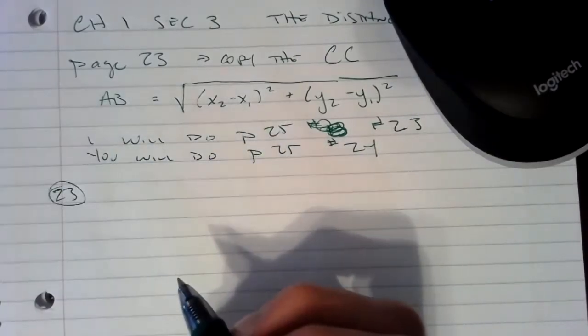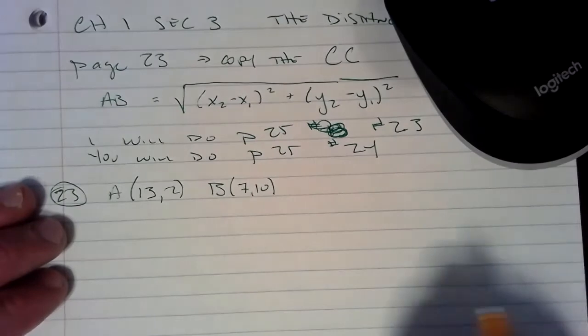Page 25 number 23, the directions say find the distance between the two points. And take a look in the directions of the book, it does say to go see example four. Remember, you can always go to the student dynamic ebook and have another way or another explanation of the distance formula. We have a point A at 13 comma 2, we have a point B at 7 comma 10.